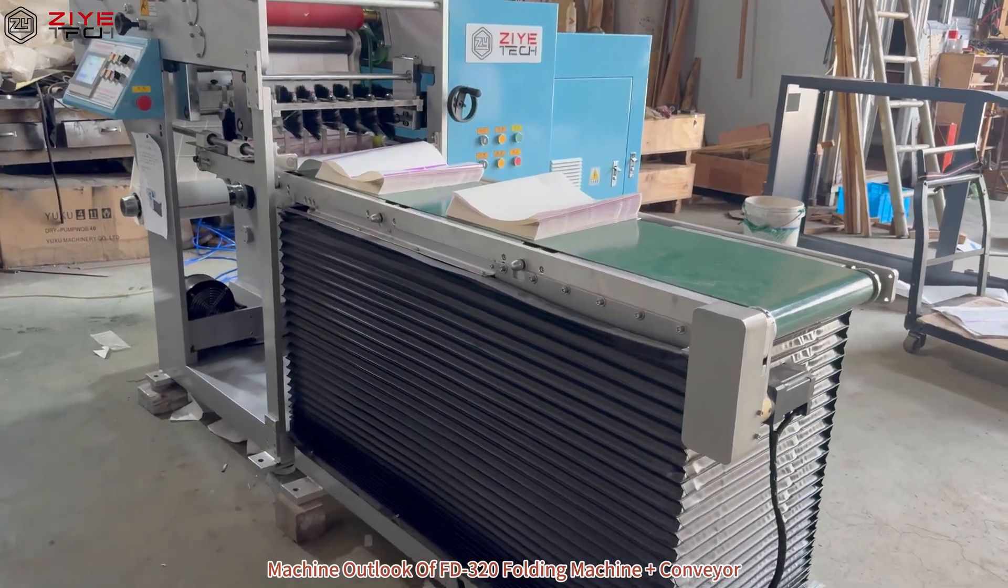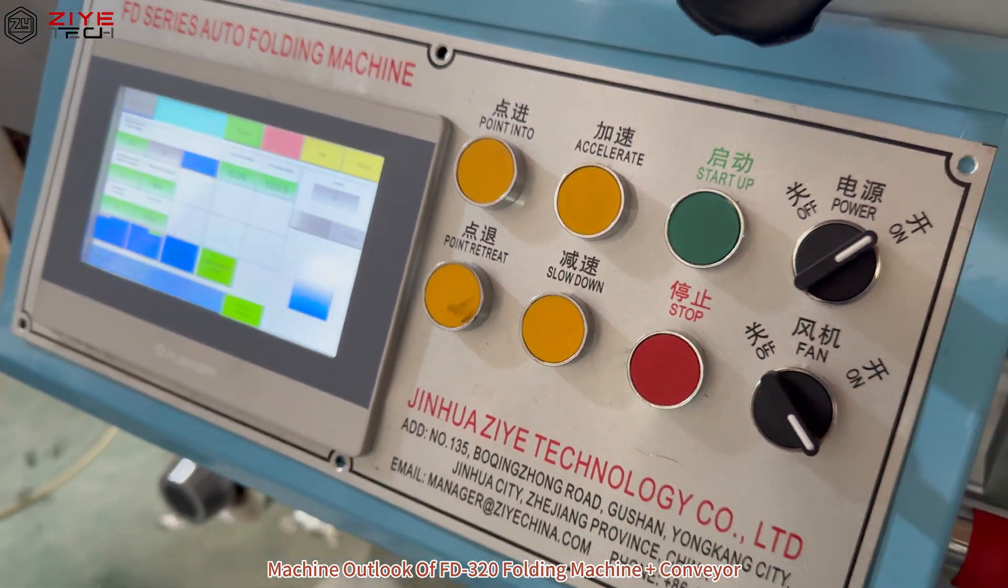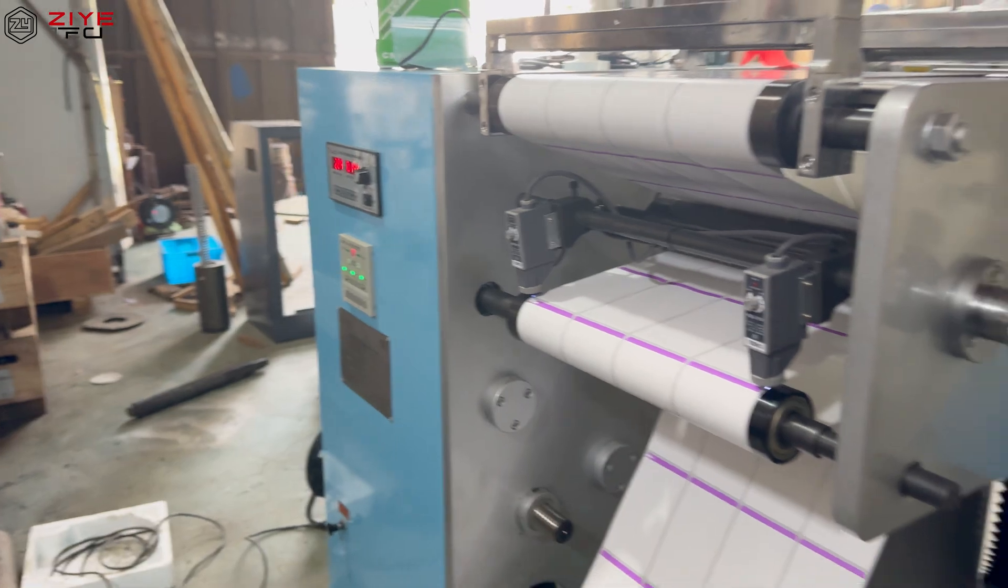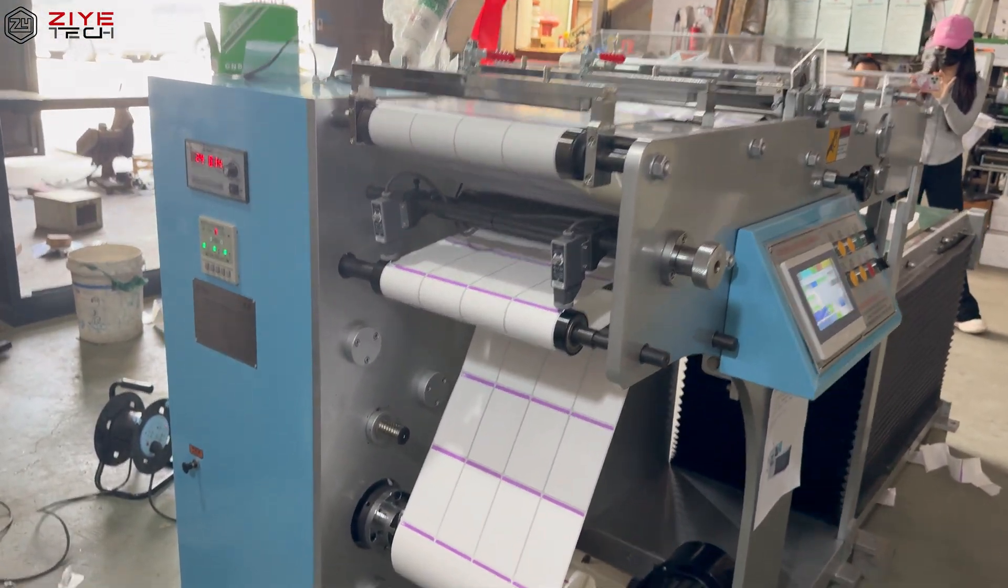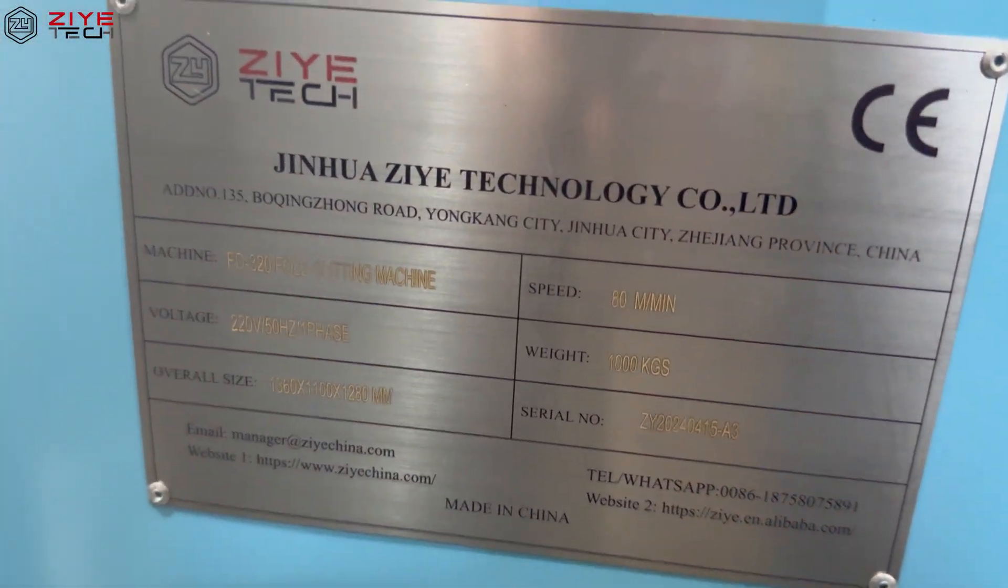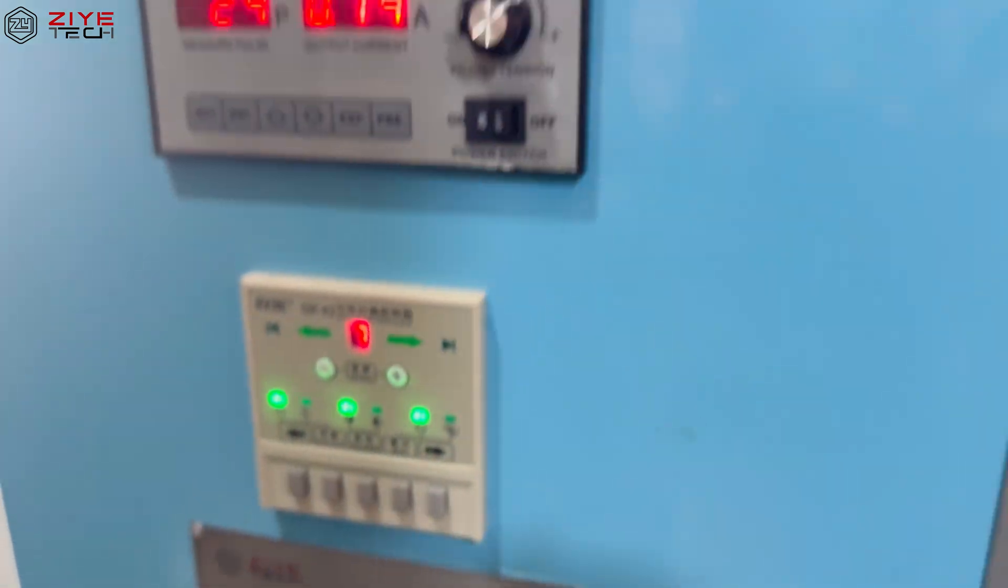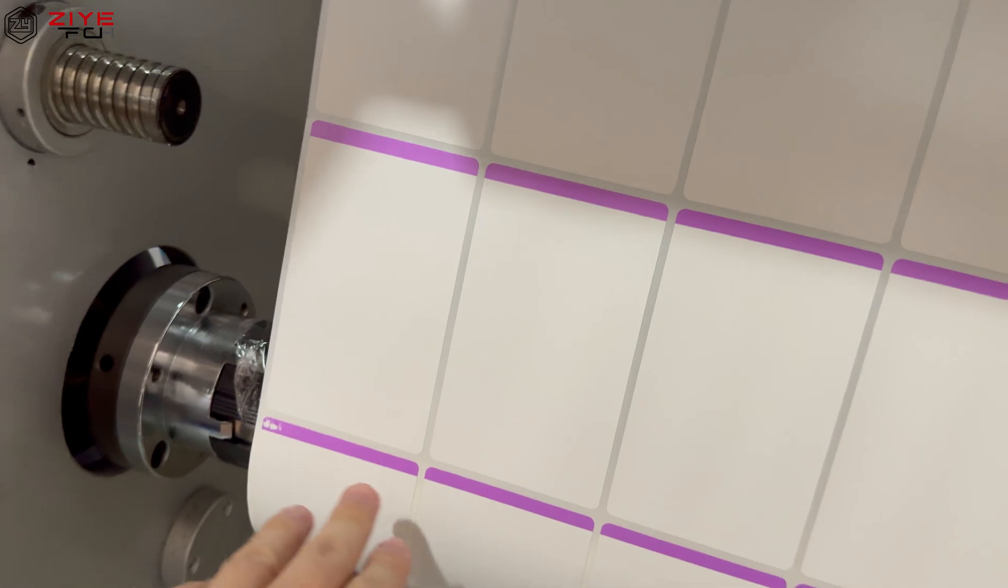Machine outlook of FD 320 Folding Machine plus Conveyor. This is the Unwind.